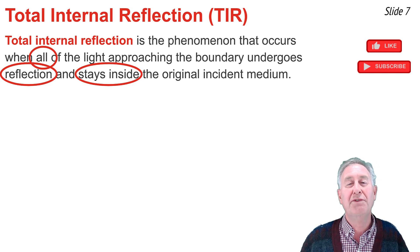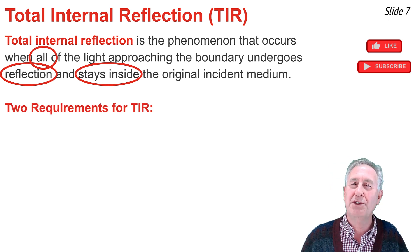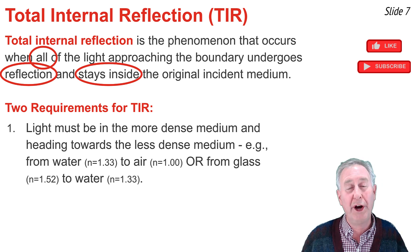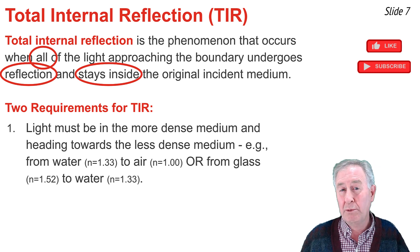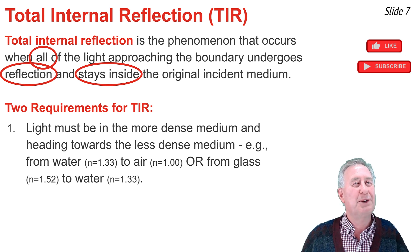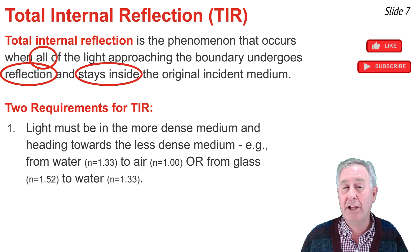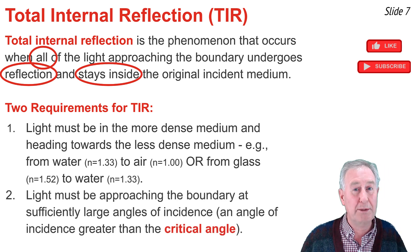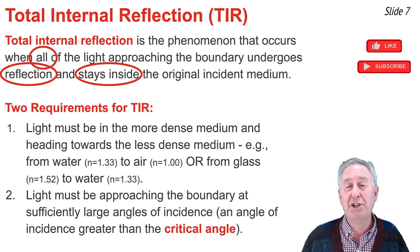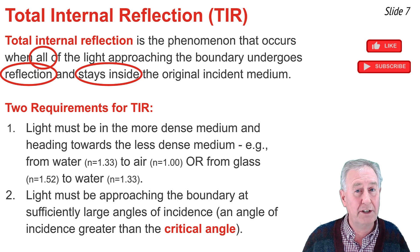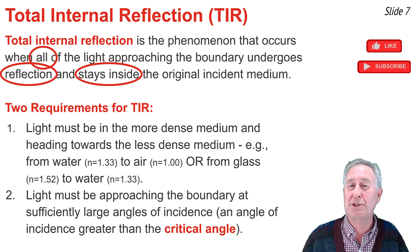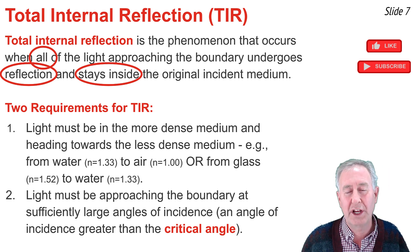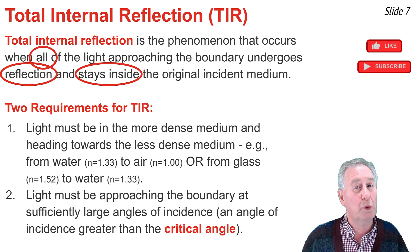TIR can occur whenever two conditions are met. First, the light must be in the more dense material heading towards the less dense material — we observed it when light was in water heading towards air, but not when light in air approached water. Second, the angle of incidence must be sufficiently large — specifically, greater than some critical angle value. We observed TIR at 70 degrees but not at 45 degrees, because 45 degrees was not sufficiently large.